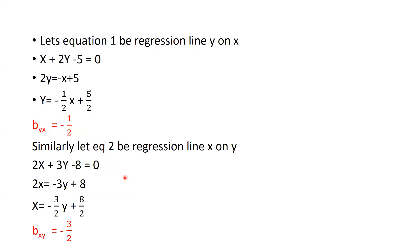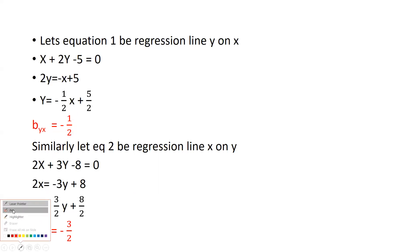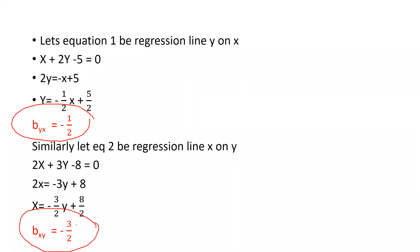Similarly, let's treat equation 2 as the regression line x on y. So 2x plus 3y minus 8 equal to 0 gives us 2x equal to minus 3y plus 8, so x equal to minus 3y/2 plus 8/2. Finally, we have got the regression coefficient x on y: bxy equal to minus 3/2. So both regression coefficients are byx equal to minus 1/2 and bxy equal to minus 3/2.